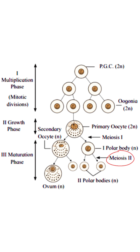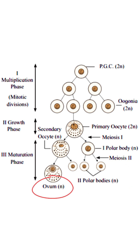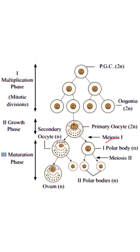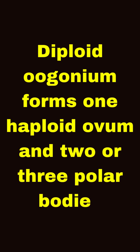Meiosis II of the secondary oocyte forms two unequal haploid cells. The smaller is called the second polar body and has very little cytoplasm, while the larger is called the ootid, which has almost all the cytoplasm and differentiates to form the ovum. Meanwhile, the first polar body may divide into two polar bodies. All polar bodies degenerate after meiosis. So from one diploid oogonium, oogenesis forms one haploid ovum and two or three polar bodies.